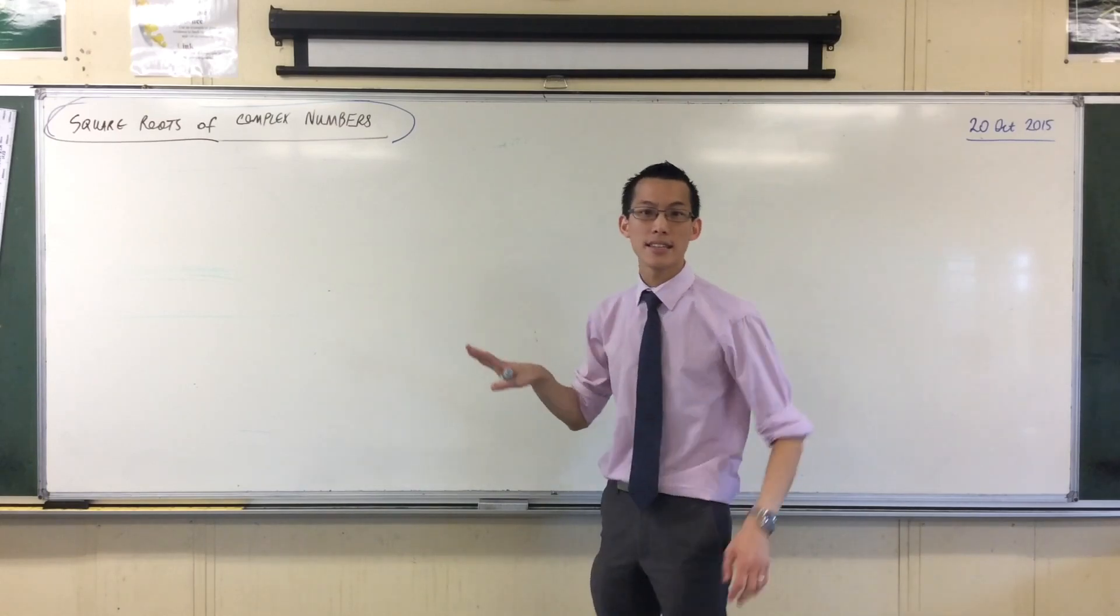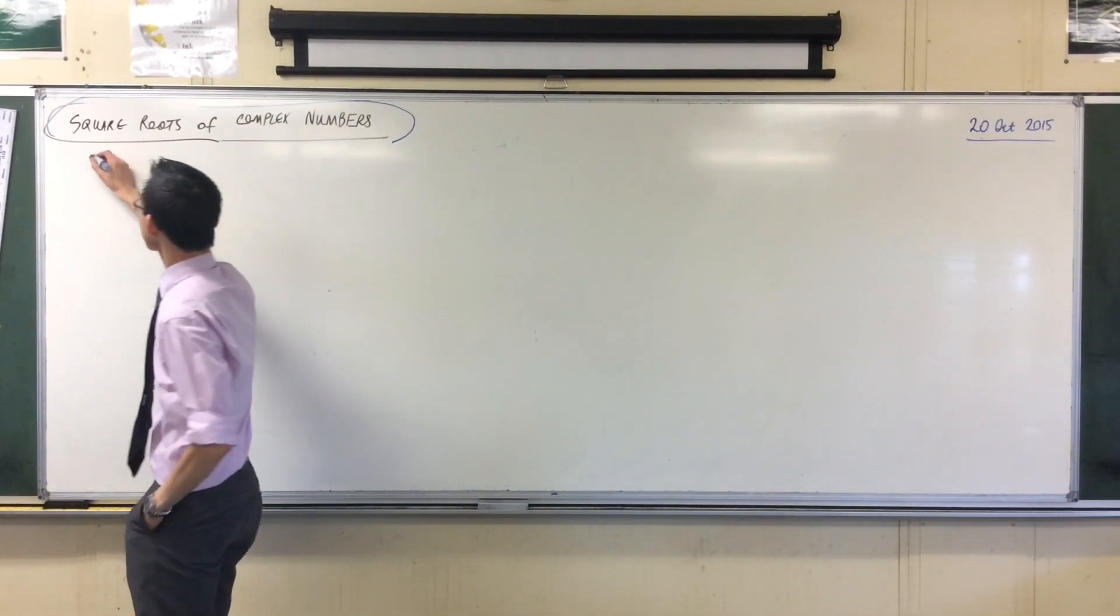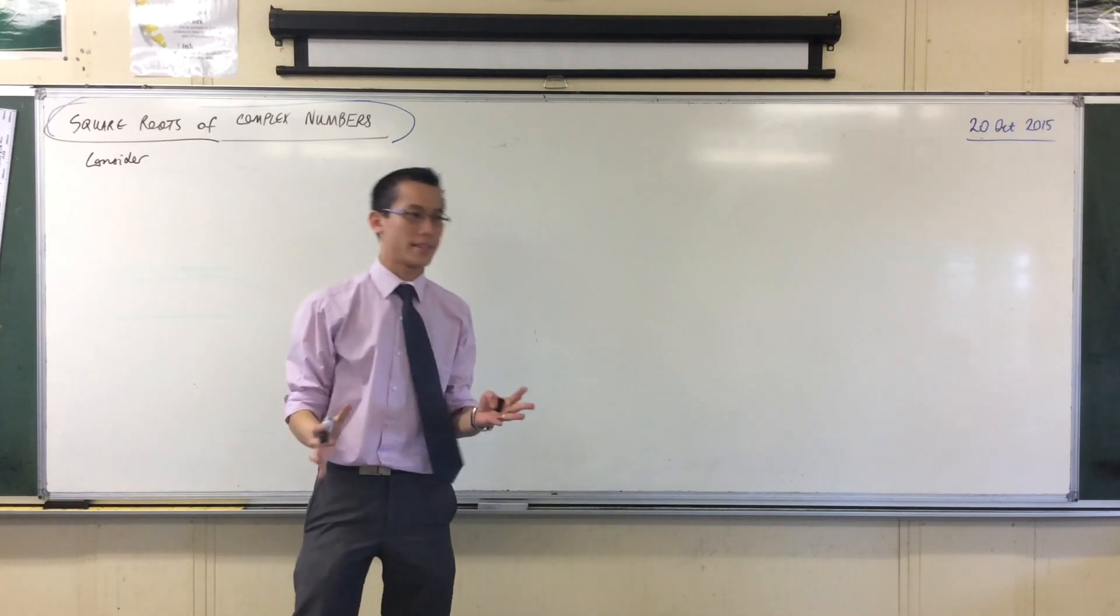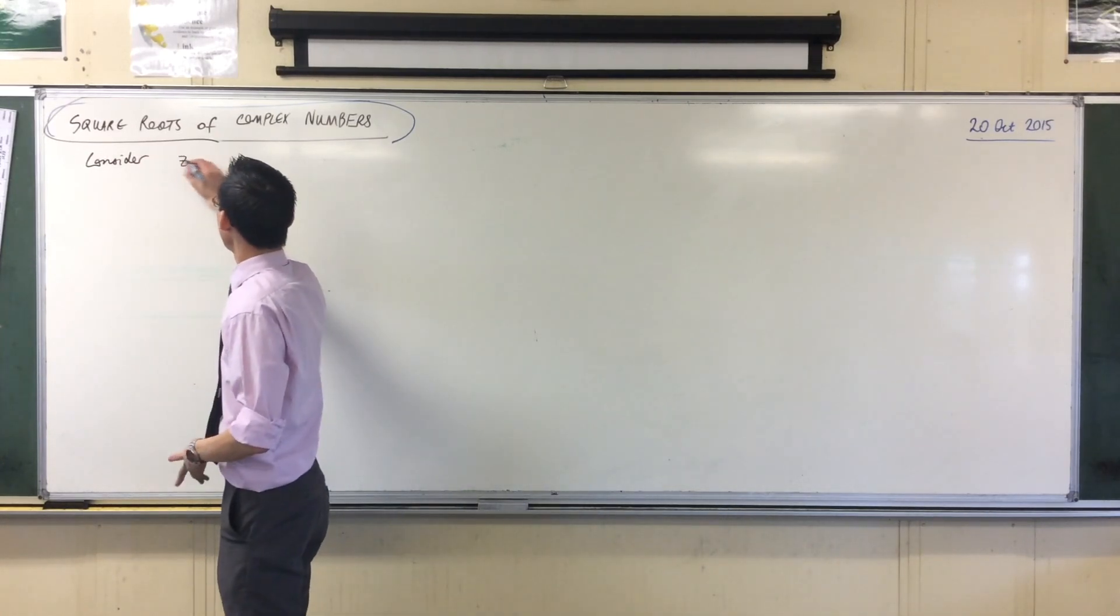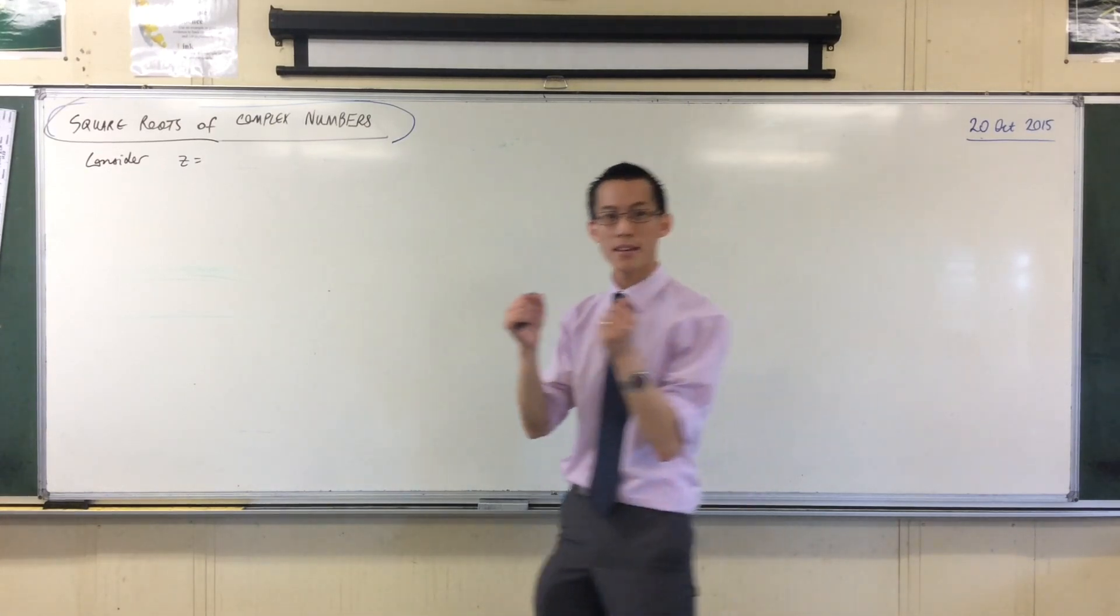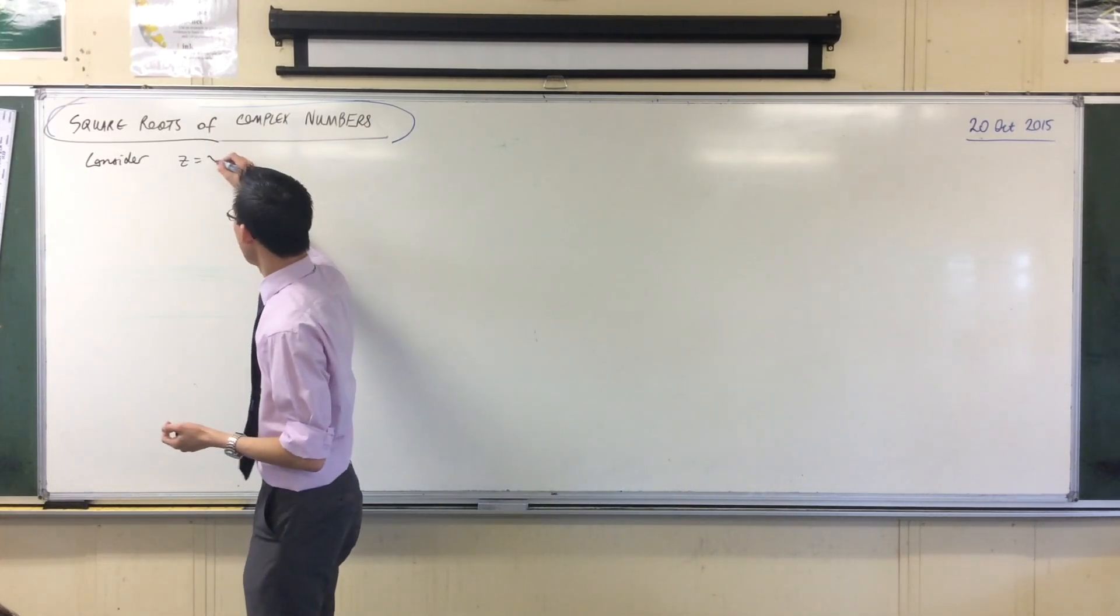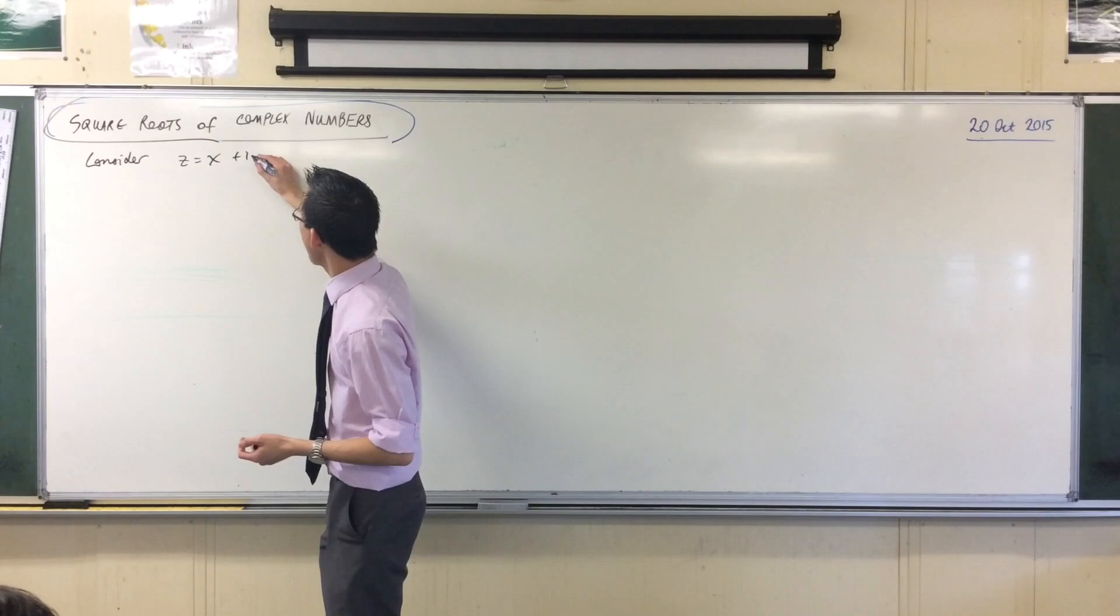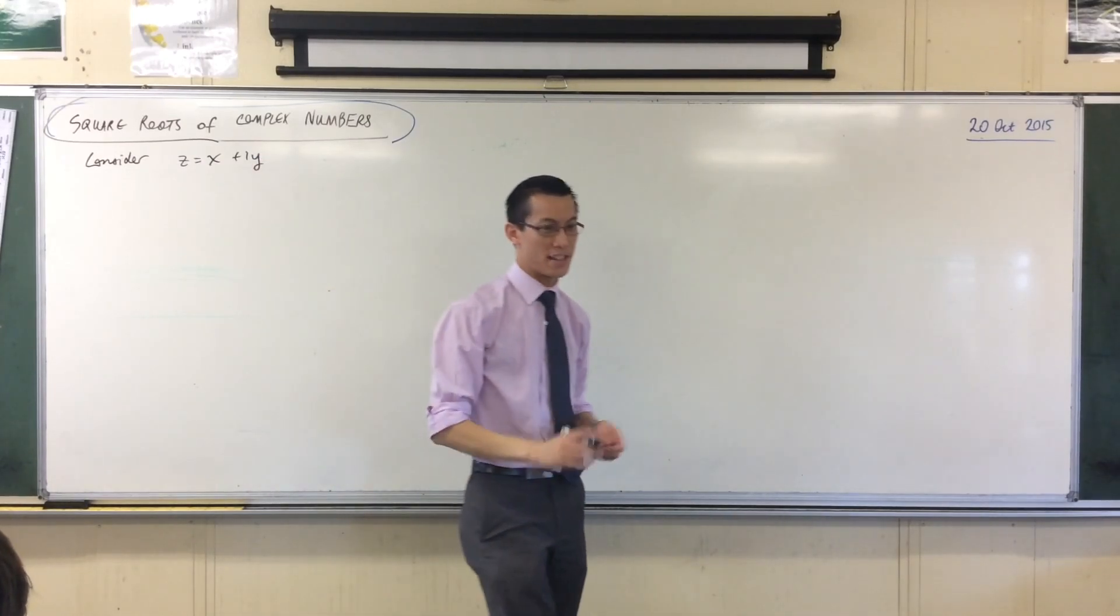So let's just consider, if I have a complex number x, and by definition a complex number has two components, namely x the real part, and iy the imaginary part. So I've got these two pieces.